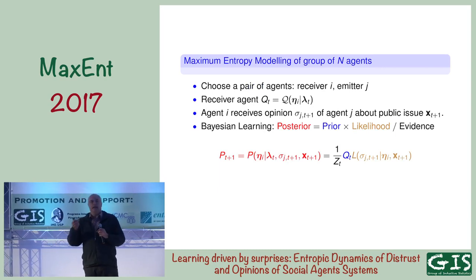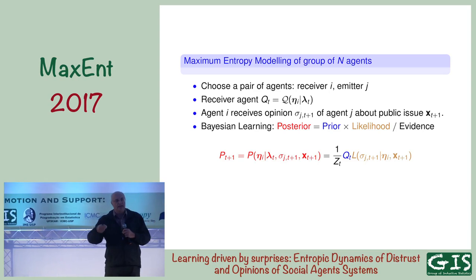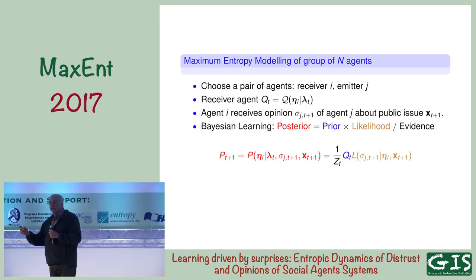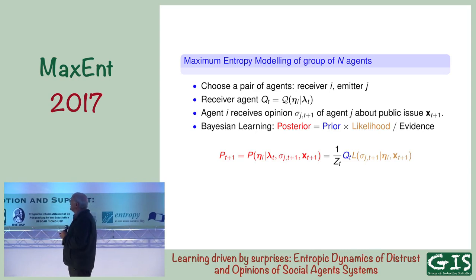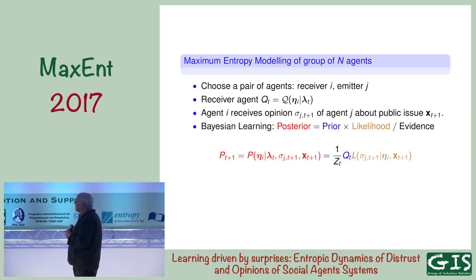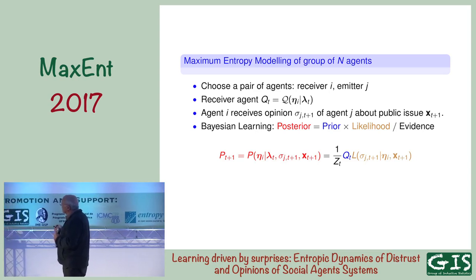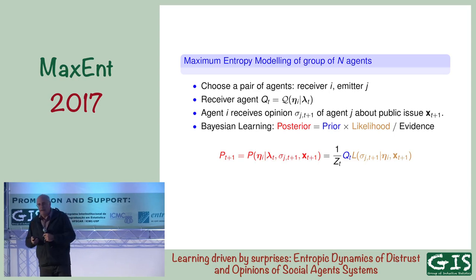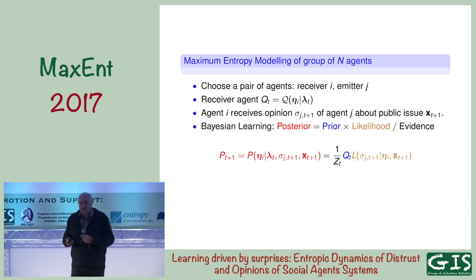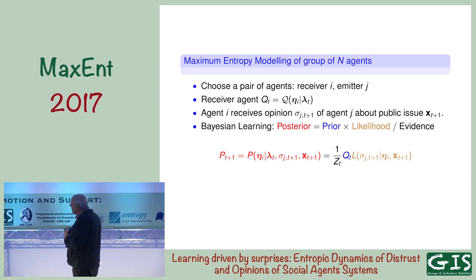Now I look at the society. I pick up two agents, A and J. J is the emitter of information; I is the receiver of information. And once agent I receives the opinion of agent J about a given issue, which is public, I can do Bayesian updating. Bayes has a prior and a likelihood. This likelihood is something that depends on the architecture of this agent. And then there is a normalizing term, which in some communities is called the evidence, in others the partition function.